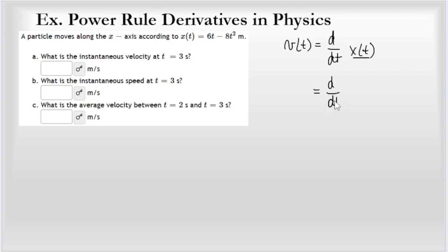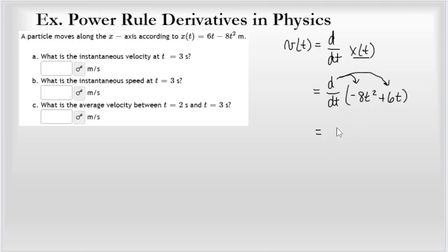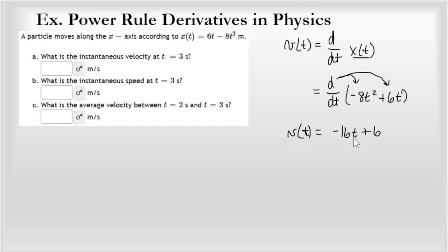Taking d/dt of negative 8t squared plus 6t — reordering to put the highest power first. Distributing the derivative to each term: bring the 2 out front and multiply by negative 8, giving negative 16t (since 2 minus 1 is 1, we just have t). Then bring the 1 down and multiply by 6, giving 6, and t to the zeroth power is 1, so we don't write it. The instantaneous velocity as a function of time is negative 16t plus 6.